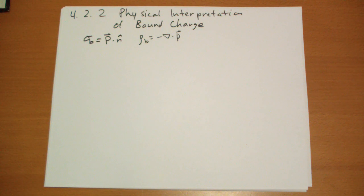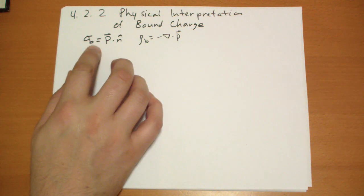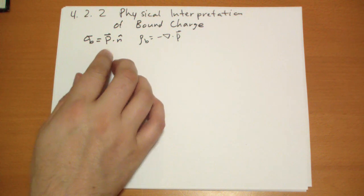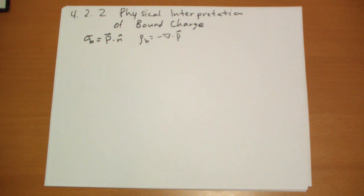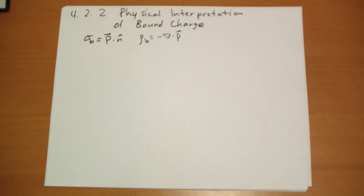Section 4.2.2 is where Griffith explains that the surface bound charge and the volume bound charge — or the bound surface charge, bound volume charge — are not just constructs of your imagination. You might be tempted to think we did that funky trick with the integral and this thing falls out as a good crutch, but it's really more than that.